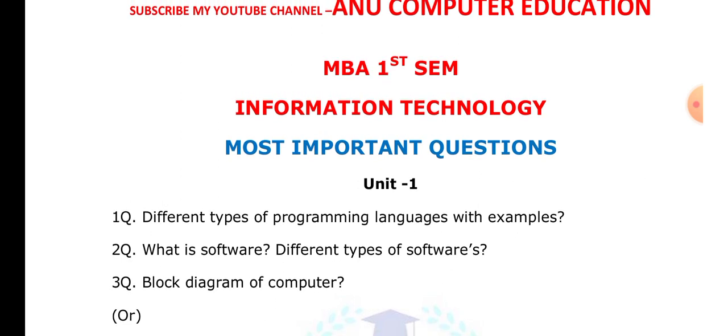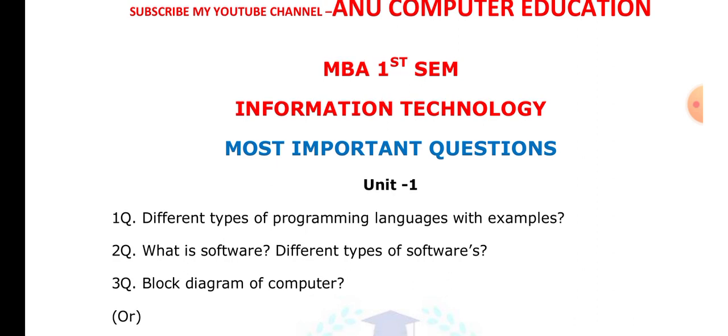What are the different types of programming languages? We have a total of three types of programming languages: assembly level language, binary level language, and high level language. All these languages you have to explain with your own examples. What is software? Software is nothing but a collection of programs used to perform a specific task.